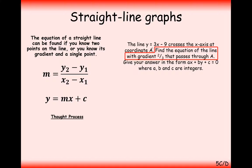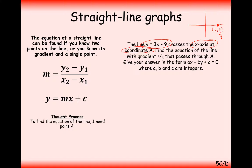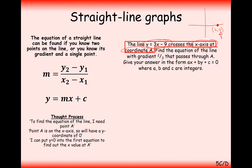We need to find coordinate A. We're told the line crosses the x-axis, and anywhere on the x-axis has a y-value of 0. For example, a point on the x-axis might be (6, 0) — but it's the 0 that's important, meaning the y-value equals 0. So whenever something crosses the x-axis, we put y equals 0 into the equation of the line to work out what x needs to be.